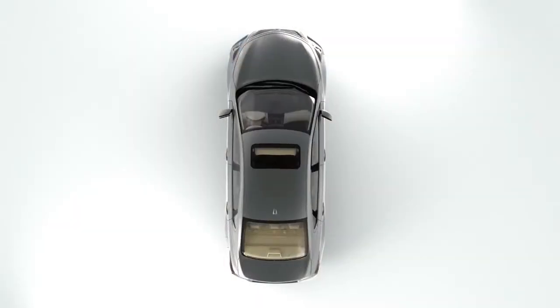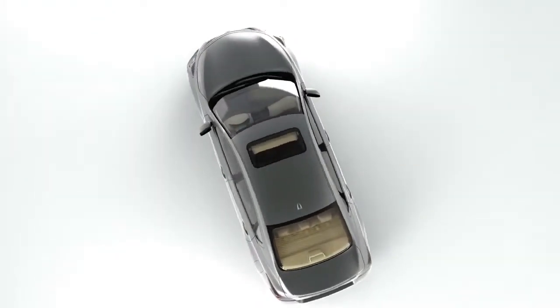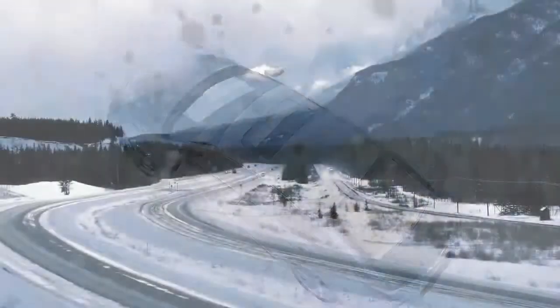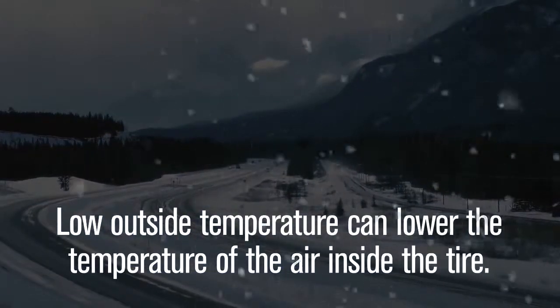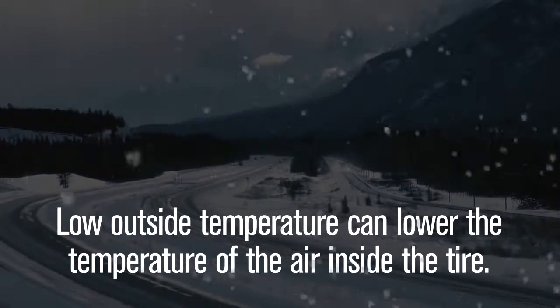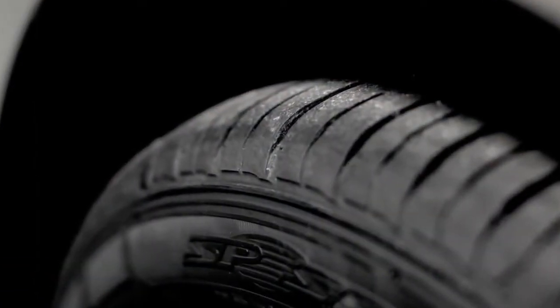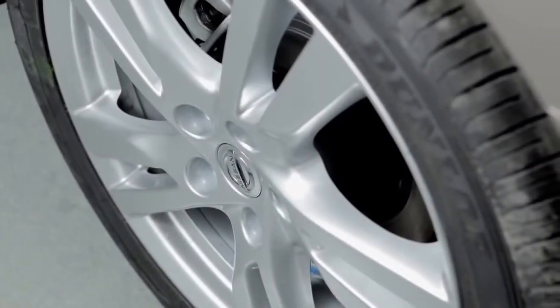Tire pressure rises and falls depending on the heat caused by the vehicle's operation and the outside temperature. Low outside temperature can lower the temperature of the air inside the tire, which can cause a lower tire inflation pressure. This may cause the low tire pressure warning light to illuminate. If the warning light illuminates in low ambient temperature, check the tire pressure in your tires.